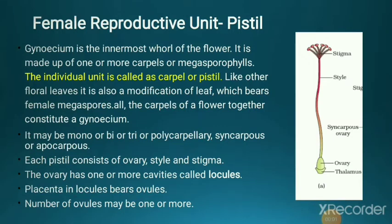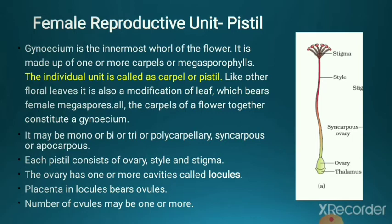The female reproductive unit or pistil - gynoecium - is the innermost whorl of the flower and the female reproductive part of any angiospermic plant. It is made up of one or more carpels or megasporophylls. A single unit of the female reproductive system is called a carpel or pistil. Like all other floral parts such as calyx, corolla, and androecium, it is also a modified leaf which bears female megaspores, because female spores are large in size.